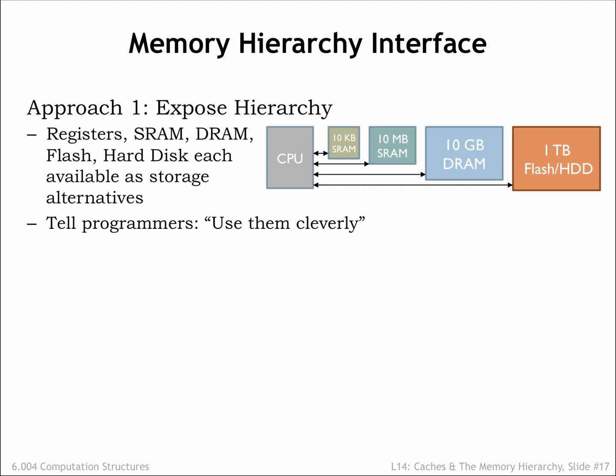There are two approaches we might take. The first is to expose the hierarchy, providing some amount of each type of storage, and let the programmer decide how best to allocate the various memory resources for each particular computation. The programmer would write code that moved data into fast storage when appropriate, then back to the larger and slower memories when low-latency access was no longer required. There would only be a small amount of the fastest memory, so data would constantly be in motion as the focus of the computation changed.